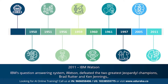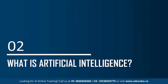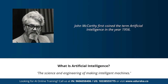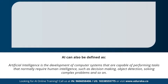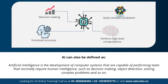Now let's understand what exactly artificial intelligence is. The term was first coined by John McCarthy, who defined AI as the science and engineering of making intelligent machines. In other words, AI can be defined as the development of computer systems capable of performing tasks that require human intelligence, such as decision making and object detection.